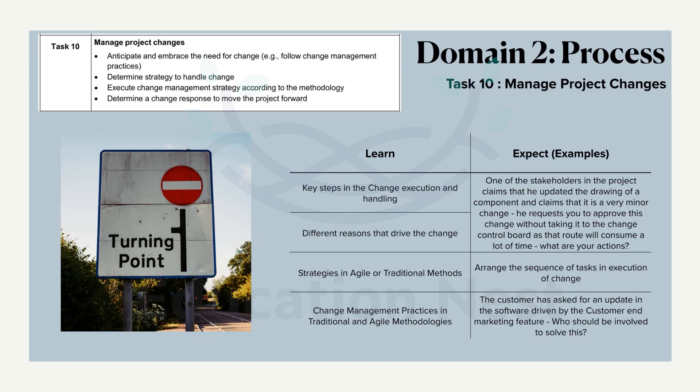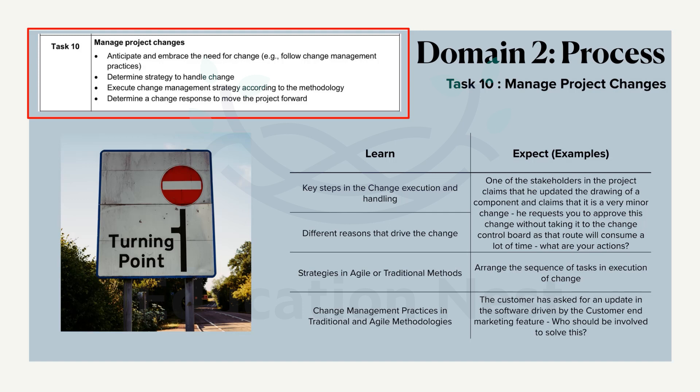The scope of a project might also be reduced — a customer may call at a future point in time and say the project deliverables have been reduced. We have to manage all such changes and understand why a change is going to happen and how to handle it. PMI expects us to anticipate and embrace the need for change by following change management practices: recording changes systematically, getting approval from stakeholders, and only implementing the change after that approval. We also have to determine the strategy to handle the change.